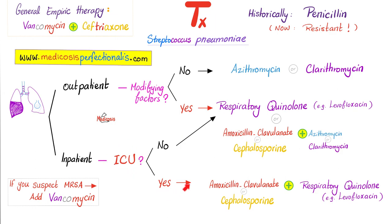If the patient is in the ICU, get serious: give a respiratory quinolone such as levofloxacin plus a beta-lactam — together. Anytime you suspect MRSA, add vancomycin on top of this. If you suspect Pseudomonas, add anti-pseudomonal antibiotics. If you suspect influenza virus, add a neuraminidase inhibitor to this regimen.